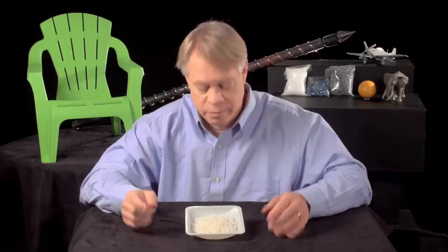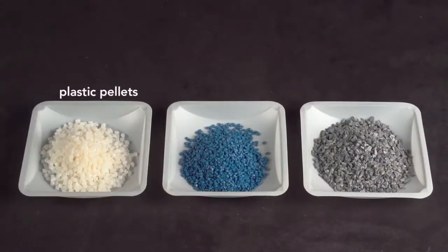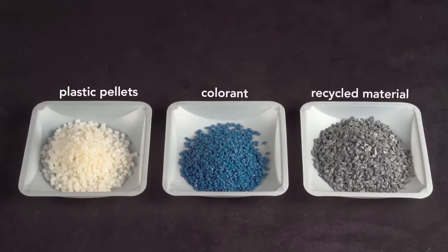All injection molded objects start with these plastic pellets, which are a few millimeters in diameter. They can be mixed with small amounts of pigment, called colorant, or with up to 15% recycled material, then fed into the injection molding machine.